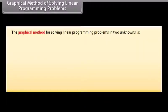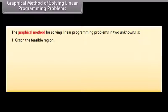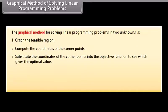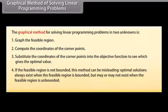The graphical method for solving linear programming problems in two unknowns: 1. Graph the feasible region. 2. Compute the coordinates of the corner points. 3. Substitute the coordinates of the corner points into the objective function to see which gives the optimal value. 4. If the feasible region is not bounded, this method can be misleading. Optimal solutions always exist when the feasible region is bounded, but may or may not exist when the feasible region is unbounded.